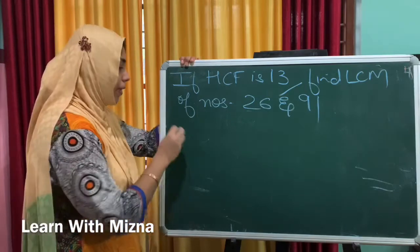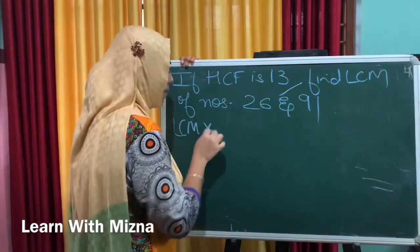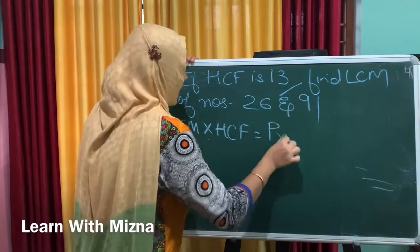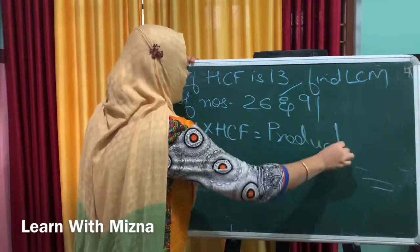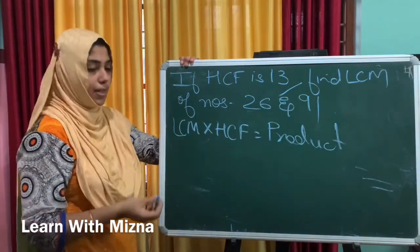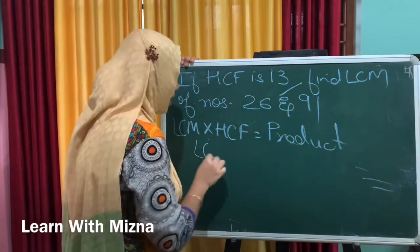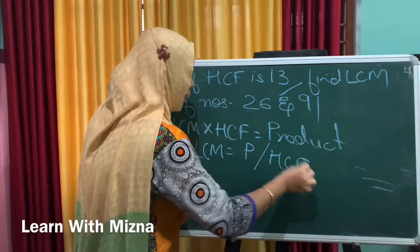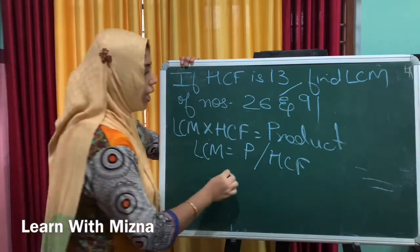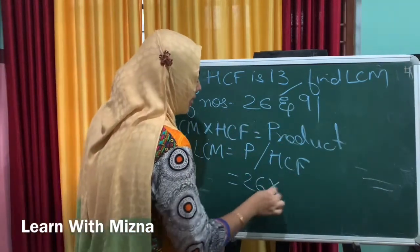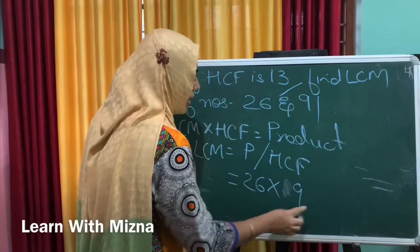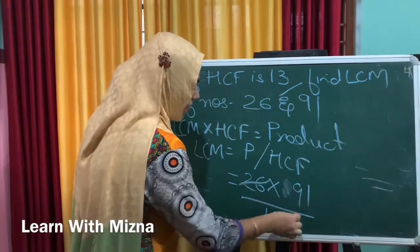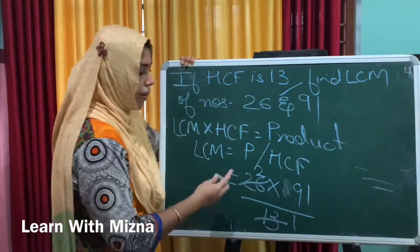We will answer using the formula: LCM into HCF is equal to product. So LCM is equal to product divided by HCF. This HCF goes over to the division. We will compute using the numbers 26 into 91, divided by HCF 13.